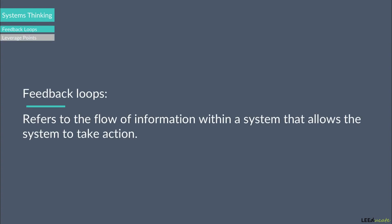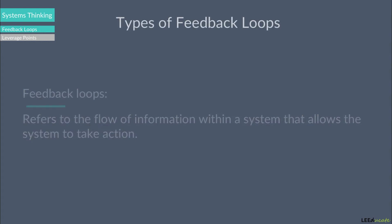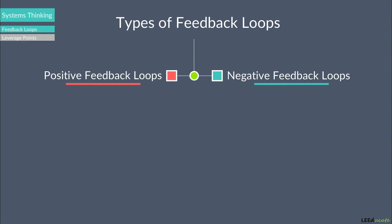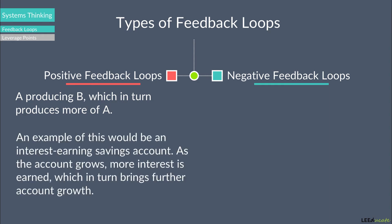Feedback loops refer to the flow of information within a system that allows the system to take action. There are two types of feedback loops in systems: positive and negative. A positive feedback loop can be summarized as A producing B, which in turn produces more of A. An example of this would be an interest-earning savings account. As the account grows, more interest is earned, which in turn brings further account growth.